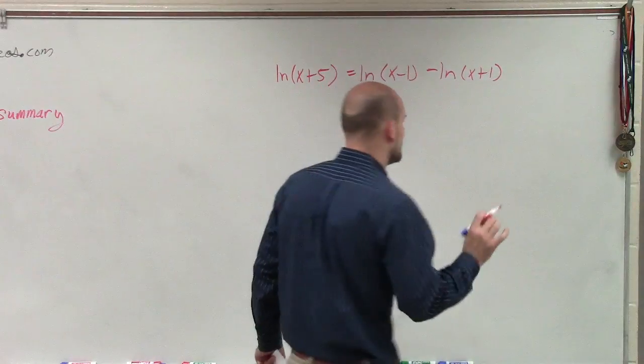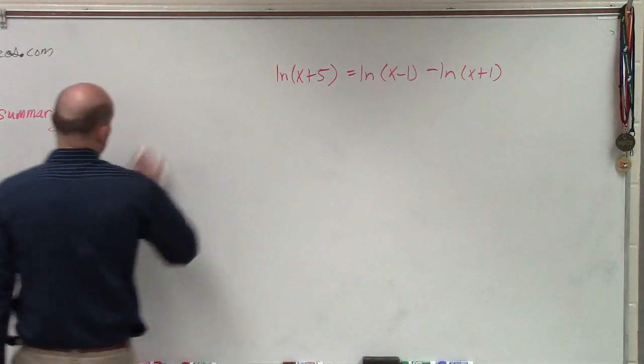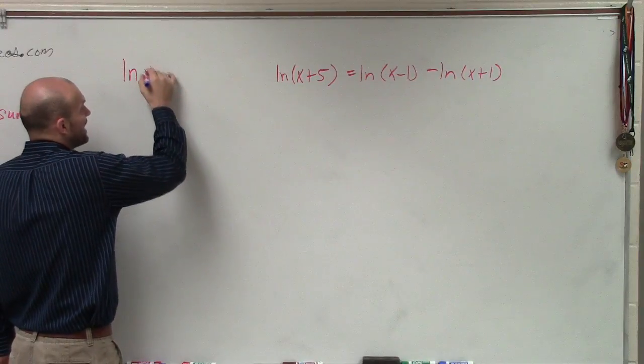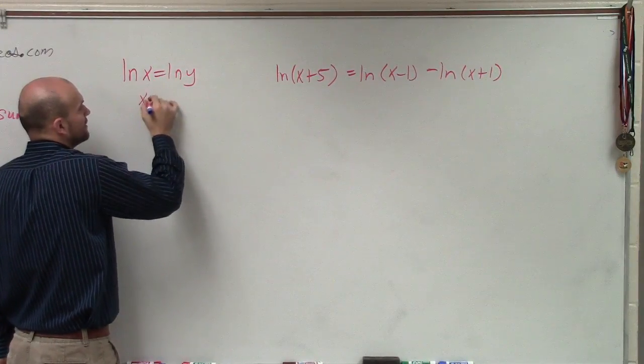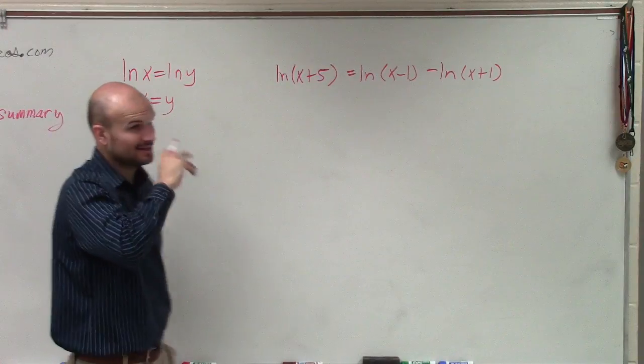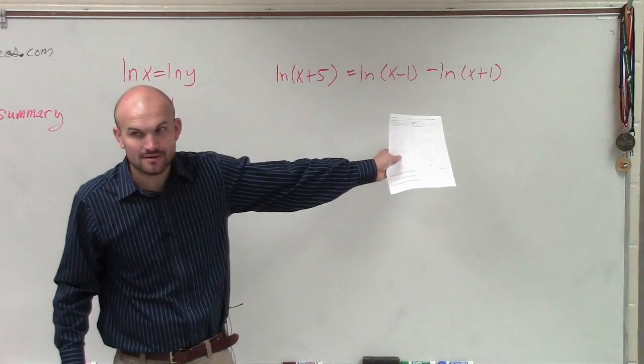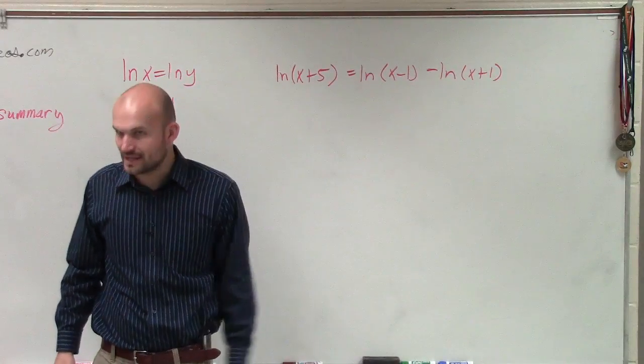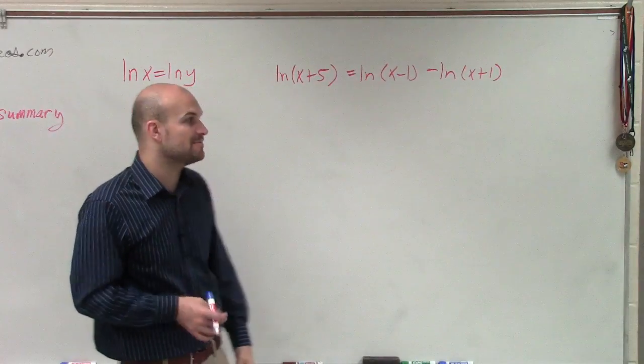I'll make this very, very clear. The one-to-one property of natural logarithms states ln of x equals ln of y, then x equals y. Is this ln equals ln? No. So do not just say the ln's can all cancel out. It's a very common misconception.